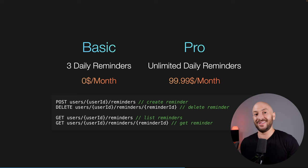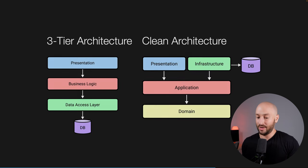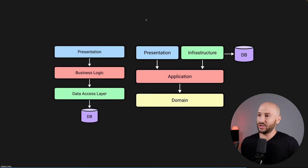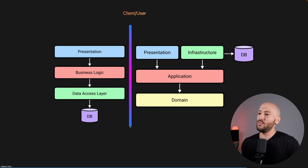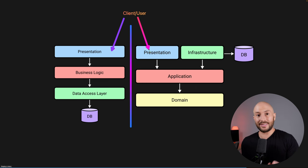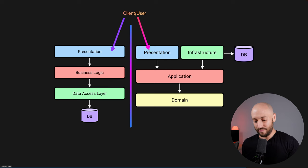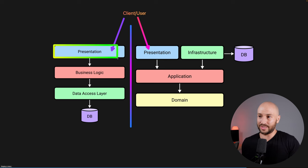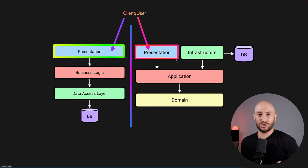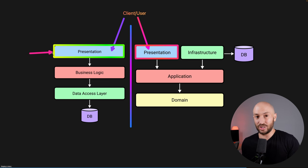To understand what I mean by a domain-centric architectural pattern, let's compare the three-tier architecture to clean architecture. No matter how our project is structured, the client or user will interact with the presentation layer. The presentation layer is responsible for interactions with the outside world. We're defining a REST API, so we'll have the controllers sitting in the presentation layer. If we were working with GraphQL or gRPC or some SPA, those would sit in the presentation layer as well.